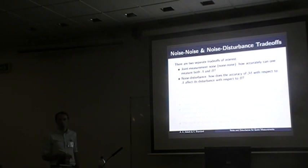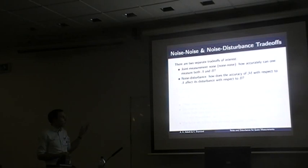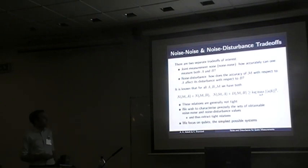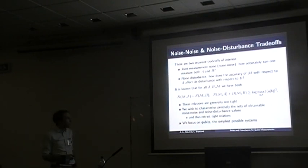There are two trade-offs to consider. The first is a joint measurement noise, or noise-noise relation: how well does measurement M jointly estimate both observables simultaneously? The second is a noise-disturbance trade-off, which is what Heisenberg's uncertainty principle really talks about. A relation was shown bounding both the sum of noises for A and B, and the sum of noise and disturbance, by the same term. If the observables don't commute, this bound is non-trivial. However, these relations are not tight in general.